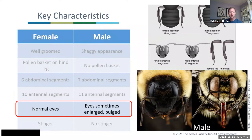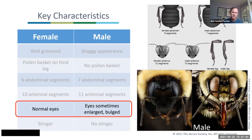Some male bees also have extremely large bulbous eyes — you can see this on the right; this particular species has very, very large eyes. This isn't true of all males, but it is true of some, and they start to look a little more like a fly than a bee. It's also worth noting that female bees have a stinger and male bees don't — the stinger is actually a modified ovipositor used to lay eggs, and males don't lay eggs. I don't recommend using this as a way to determine sex in the field, as it may lead to getting stung.